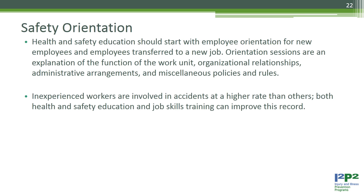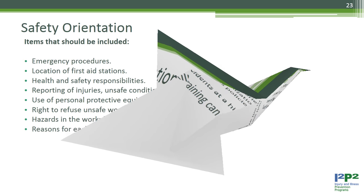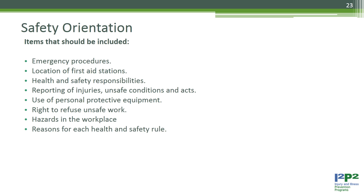Safety orientation. Health and safety education should start with employee orientation for new employees and employees transferred to a new job. Orientation sessions are an explanation of the function of the work unit, organizational relationships, administrative arrangements, and miscellaneous policies and rules. Inexperienced workers are involved in accidents at a higher rate than others. Items that should be included: emergency procedures, location of first aid stations, health and safety responsibilities, and reporting of injuries, unsafe conditions, and acts.